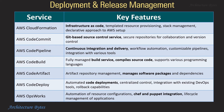Deployment and release management: AWS CloudFormation is infrastructure as code. CodeCommit is a Git-based source control service. CodePipeline provides continuous integration and delivery. CodeBuild is a build service for compiling source code. CodeArtifact manages software packages. CodeDeploy is for automated code deployments. OpsWorks is for automation of resource configuration and supports Chef and Puppet integration.